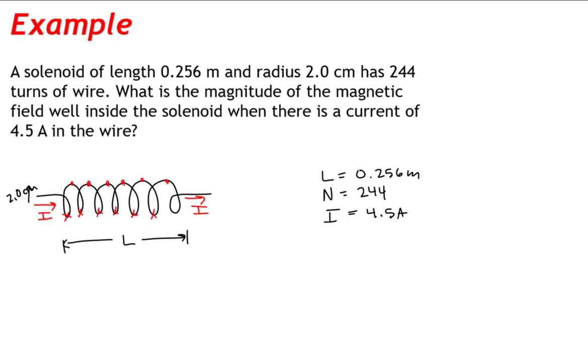Now a solenoid establishes a fairly uniform magnetic field inside. Since we want to find the magnetic field at a point well inside the solenoid, we're going to take the magnetic field to be close to the central axis and far from the solenoid's ends. The magnitude of the magnetic field will be approximately constant, given by the number of turns over the length of the solenoid times mu-naught times the current.